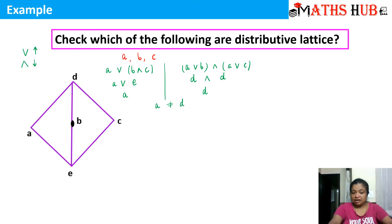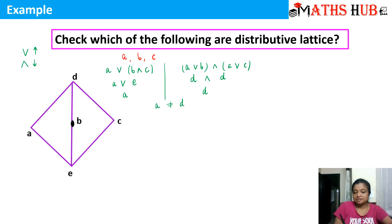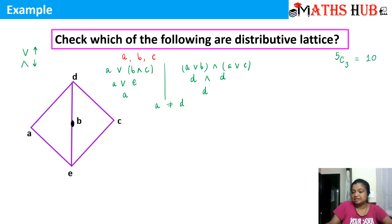So we can say that this is not a distributive lattice. If we are lucky enough that we pick up the first pair of elements and find it is not distributive, then we are done. Otherwise, if you count the elements — there are 5 elements — then out of 5 we pick 3, giving 5C3 combinations, which equals 10. So you would have to exhaust all 10 cases.